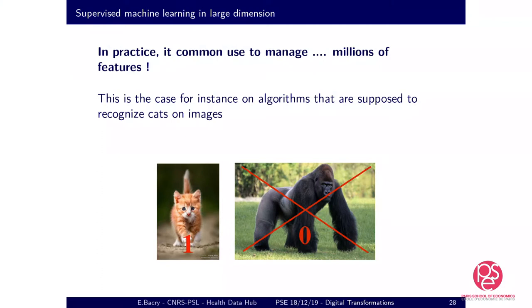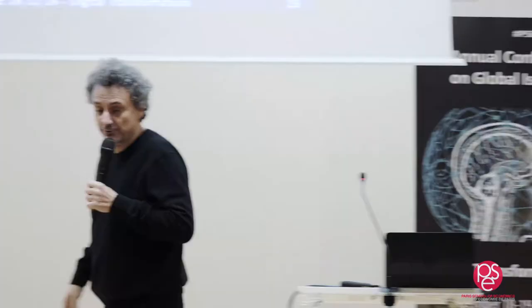In practice it's common to manage millions or even billions of features. This is the case when you're dealing with images — like this is a cat, this is not a cat.